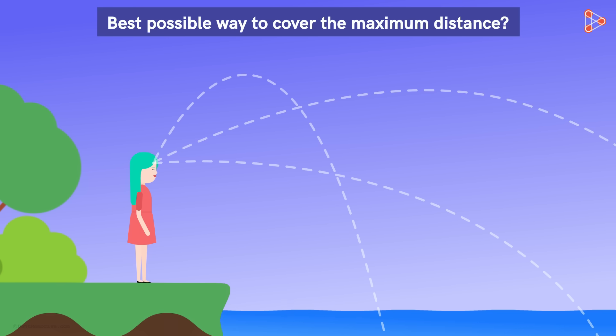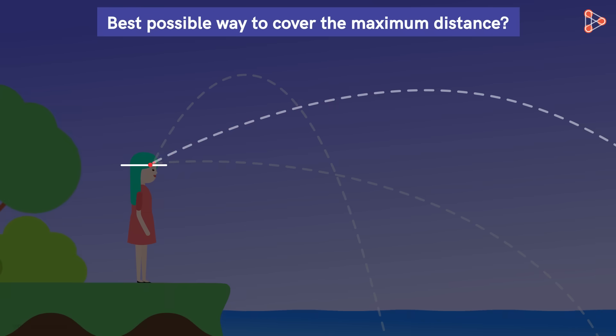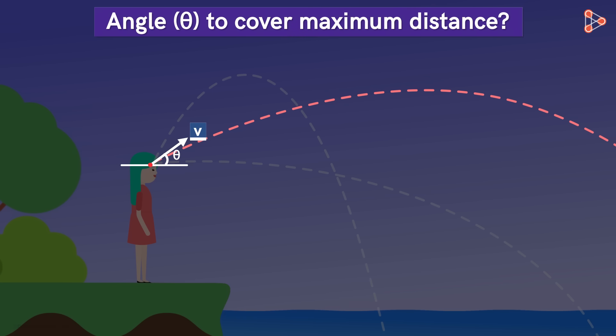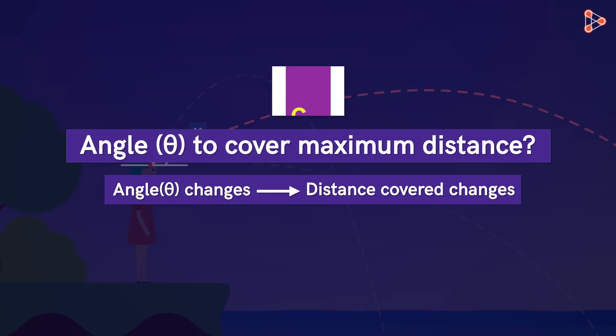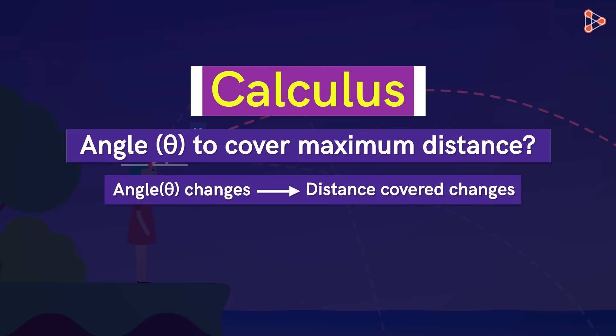Of course, the answer also depends on the speed with which you throw the stone. Let's say, if you apply all your energy, you can throw it with a speed V. So, if we throw the stone with a speed V, at what angle should we throw it to cover maximum possible distance? As the angle at which we throw the stone changes, the distance covered by it changes. And this is where calculus comes into play. To get the answer, we need to know how the distance covered by the stone changes as the angle we throw it at changes. And this is exactly the kind of problem that calculus helps us with.